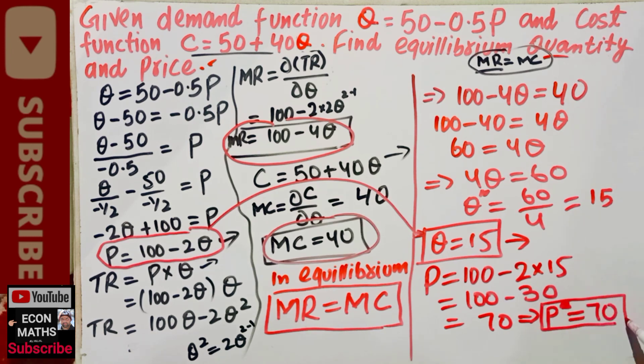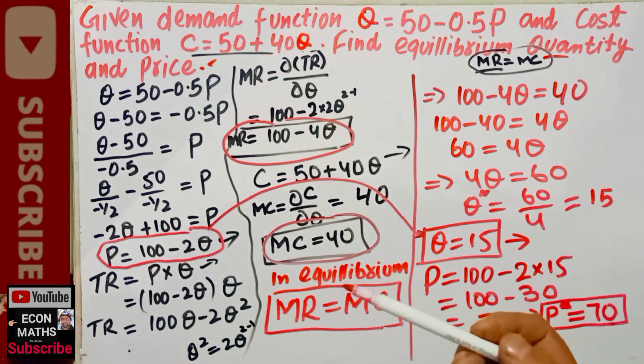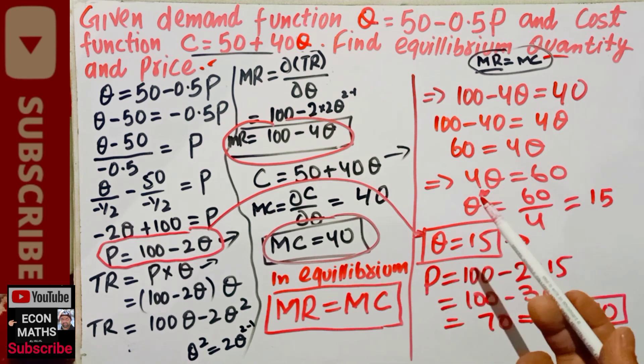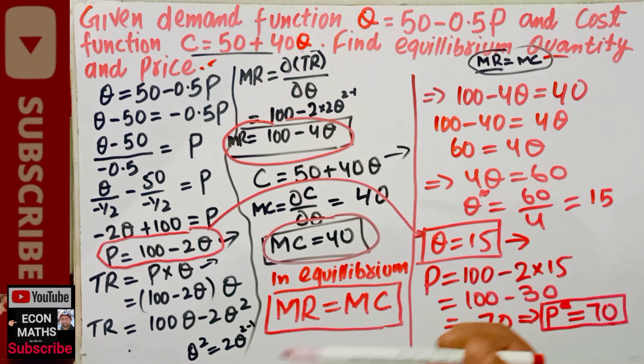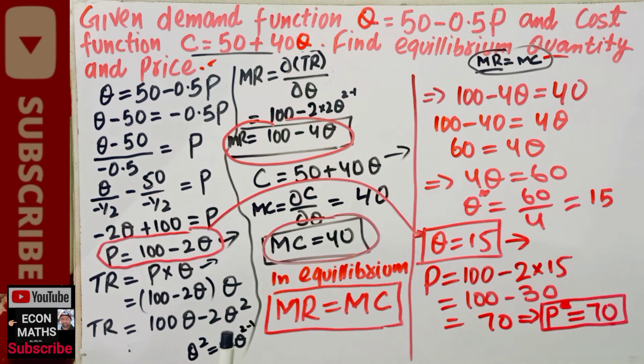This is how we find the equilibrium quantity and price when the demand function and cost function are given.